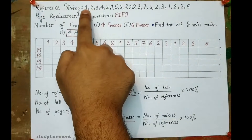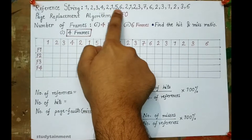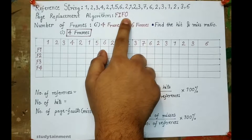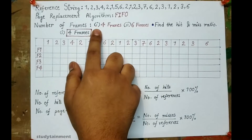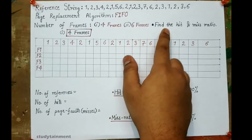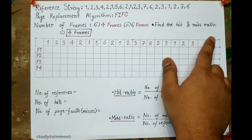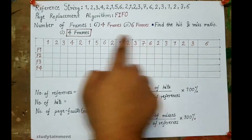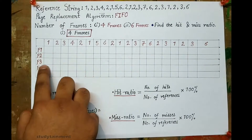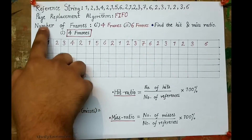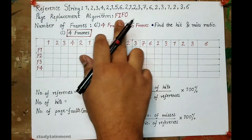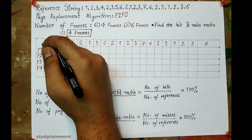The reference string in this problem is 1 2 3 4 2 1 5 6 and so on. The page replacement algorithm we have to use is FIFO. In the first part of the problem we will use 4 frames, and in the second part we will use 6 frames. We have to evaluate the hit and the miss ratio. We prepare a box with all the reference strings at the top, and F1, F2, F3, F4 are the 4 frames.